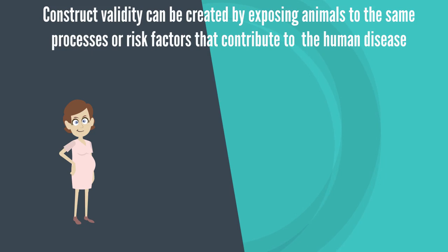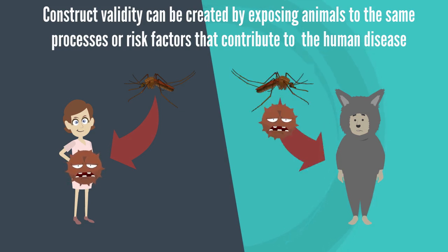Zika can be caused by infection of a pregnant mother with the Zika virus through mosquito bites. So an animal model of Zika with good construct validity will be generated by infecting pregnant animals with the Zika virus through mosquitoes.